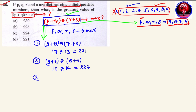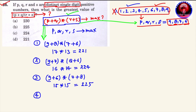Third combination: 9 को 6 के साथ लेते हैं — (9+6) × (8+7) = 15 × 15 = 225।